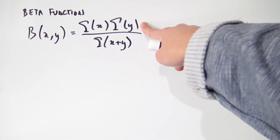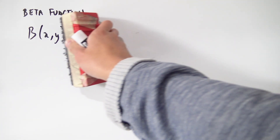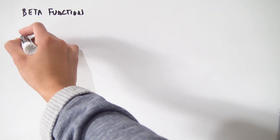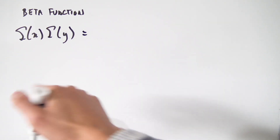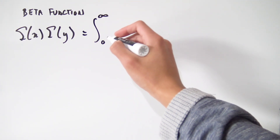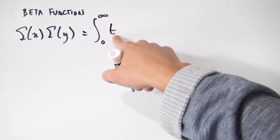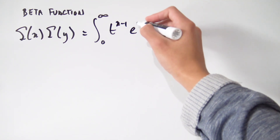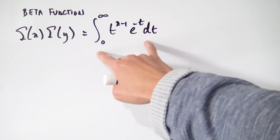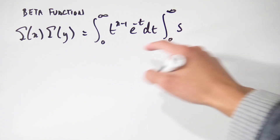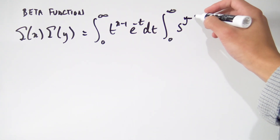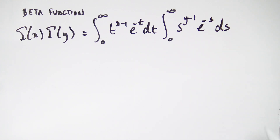First, let's look at the numerator: gamma(x) times gamma(y). We know there's an integral representation for the gamma function, so let's apply it to both. For the first gamma function, we have the integral from 0 to infinity of t to the x minus 1 times e to the minus t dt. For the second gamma function, we have the integral from 0 to infinity of s to the y minus 1 times e to the minus s ds.